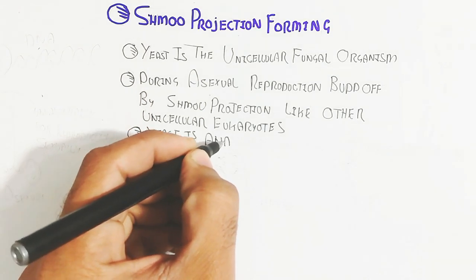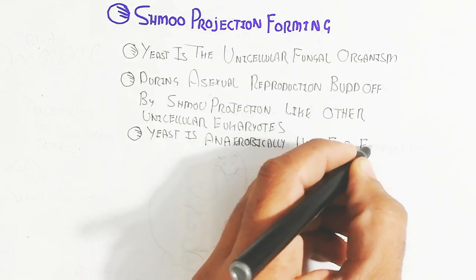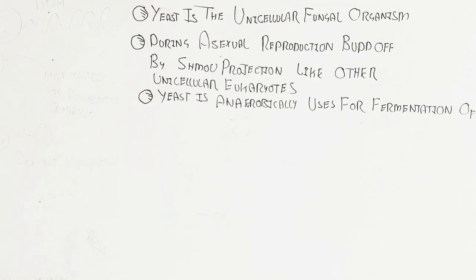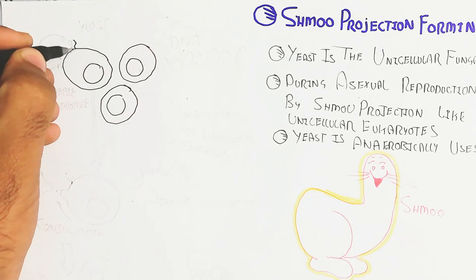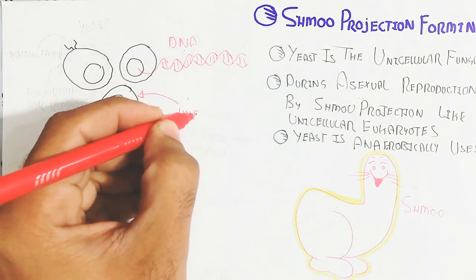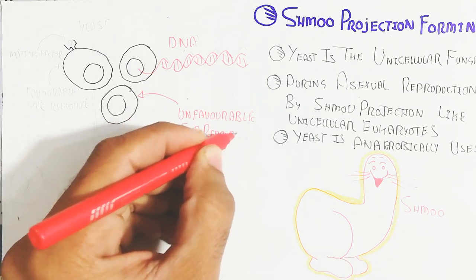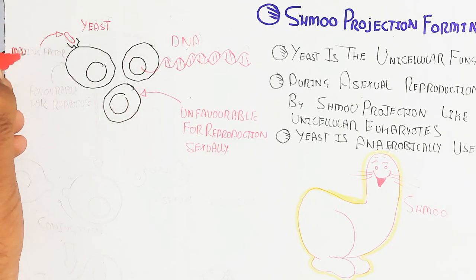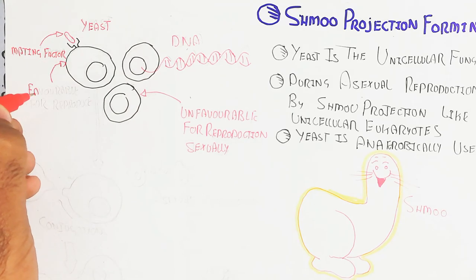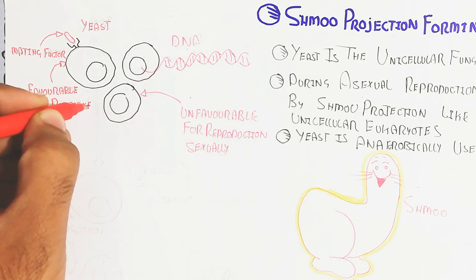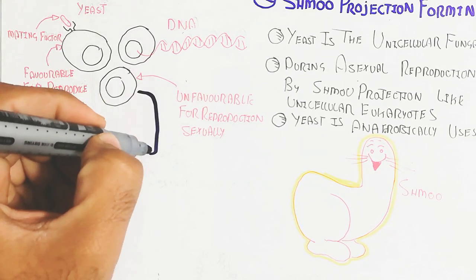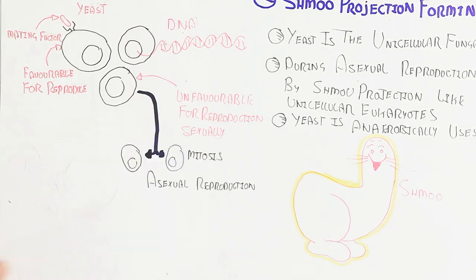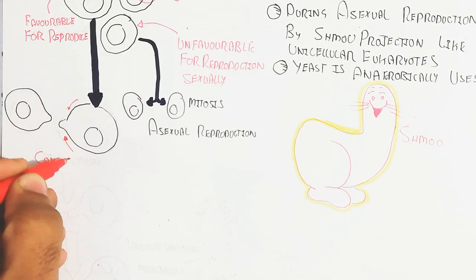Sexual reproduction is mostly involved in the shmoo projection, not asexual reproduction. Whenever the mating factor binds with the yeast during unfavorable conditions for asexual reproduction — while favorable for sexual reproduction — the mating factor will bind. If unfavorable for sexual reproduction, the cell undergoes mitosis for normal asexual cell division. But during favorable conditions for sexual reproduction, a conjugation-like structure arises due to the shmoo projection.